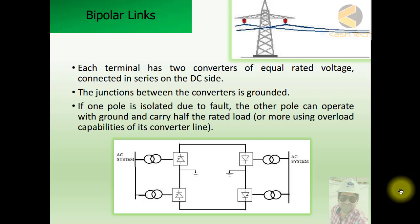Each terminal has two converters of equal rated voltage connected in series on the DC side. You can see they have two transformers and two lines, and each line is supplying power. The return can also be taken through the electrodes as per the diagram.